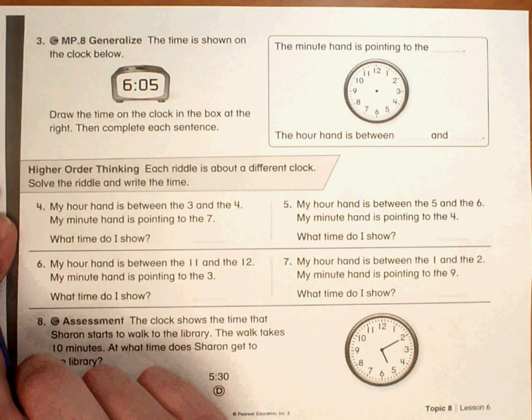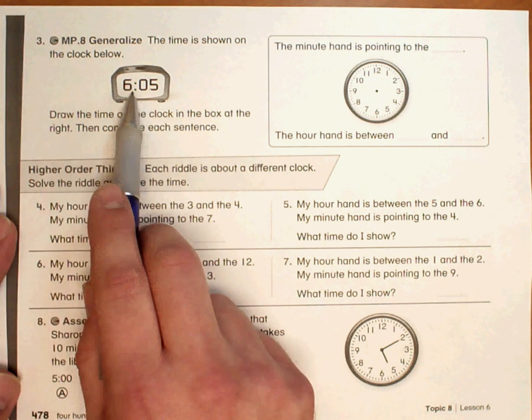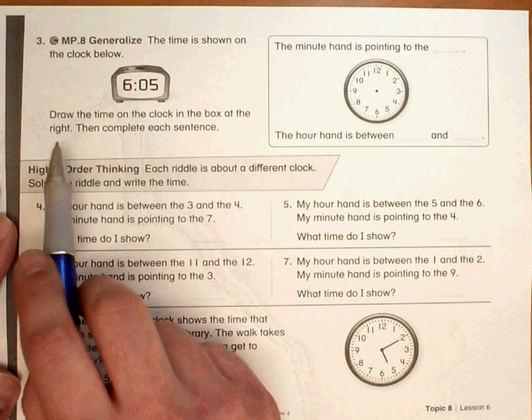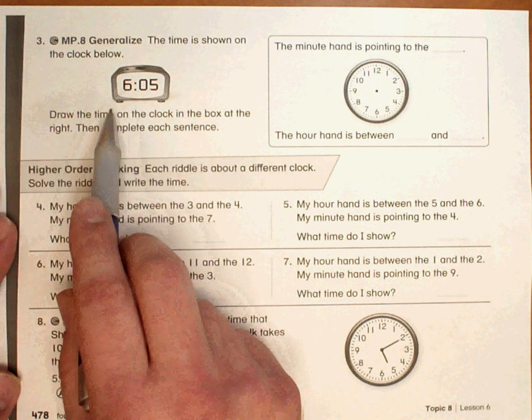So we're going to start with the hour hand. The hour hand is going to be between the 6 and the 7. So it's past the 6, not quite at the 7.